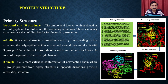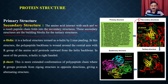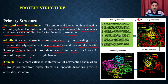Now let us talk about secondary structures. The amino acids interact with each other and as a result the peptide chain folds into secondary structures. These secondary structures are the building blocks for tertiary structures. Secondary structures could be of two types: alpha helix or beta sheets. The alpha helix is a helical structure where the peptide backbone is wound around a central axis with the R groups of the amino acids protruding outward from the helix. In most proteins, the helix is right-handed.